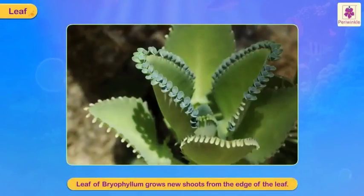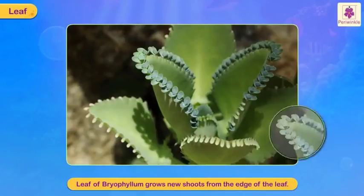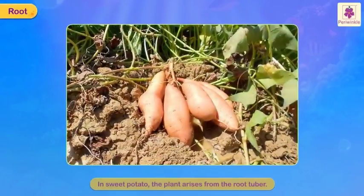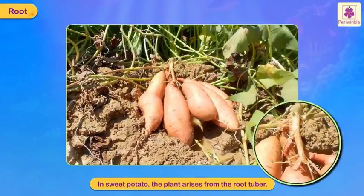The leaf of bryophyllum grows new shoots from the edge of the leaf. In sweet potato, the plant arises from the root tuber.